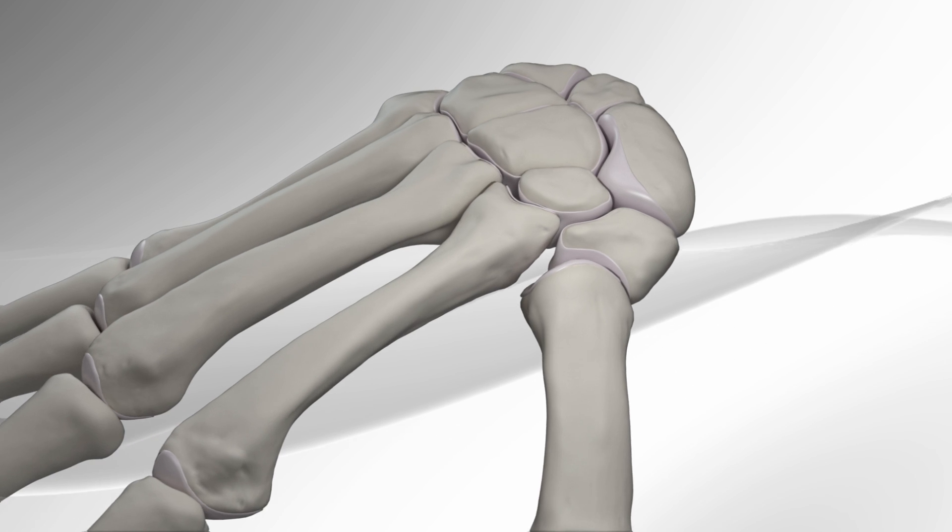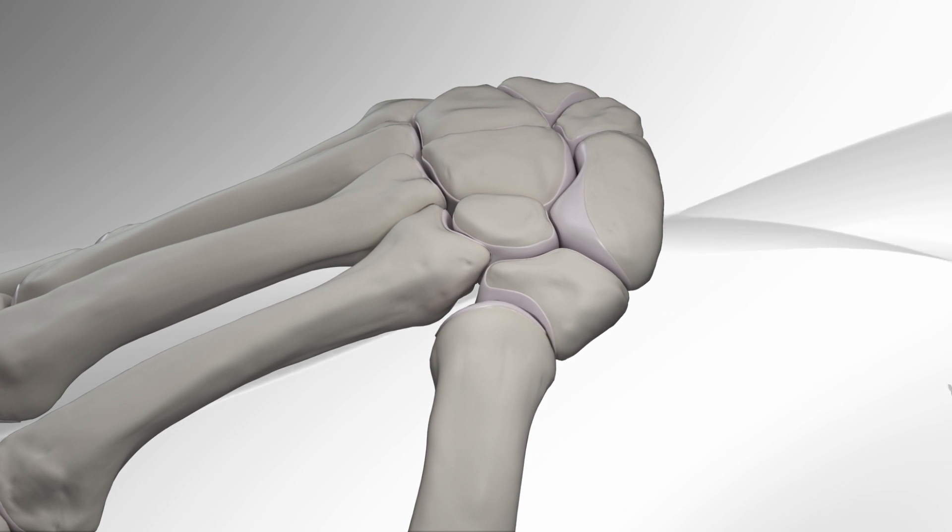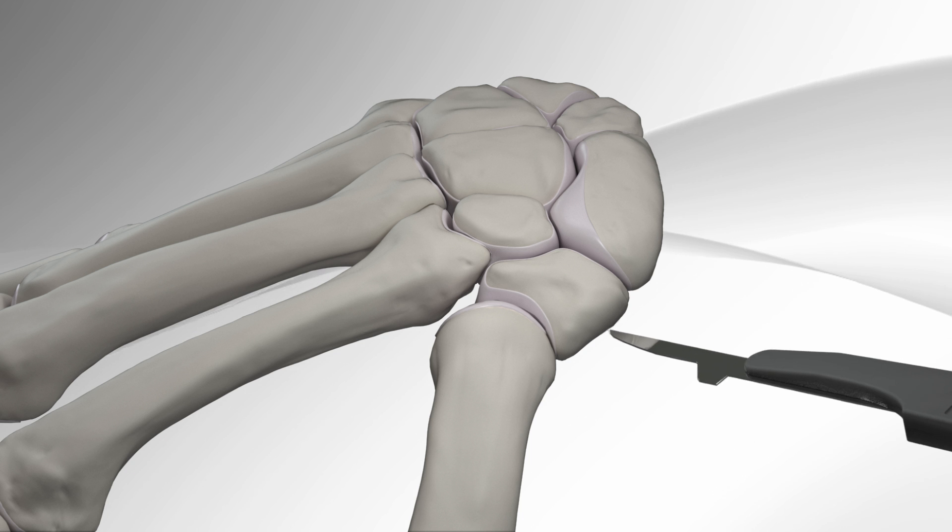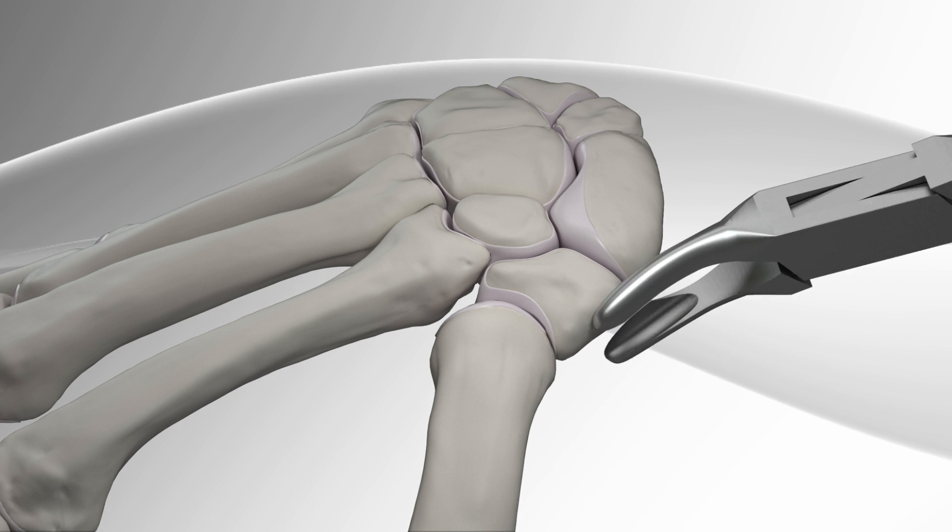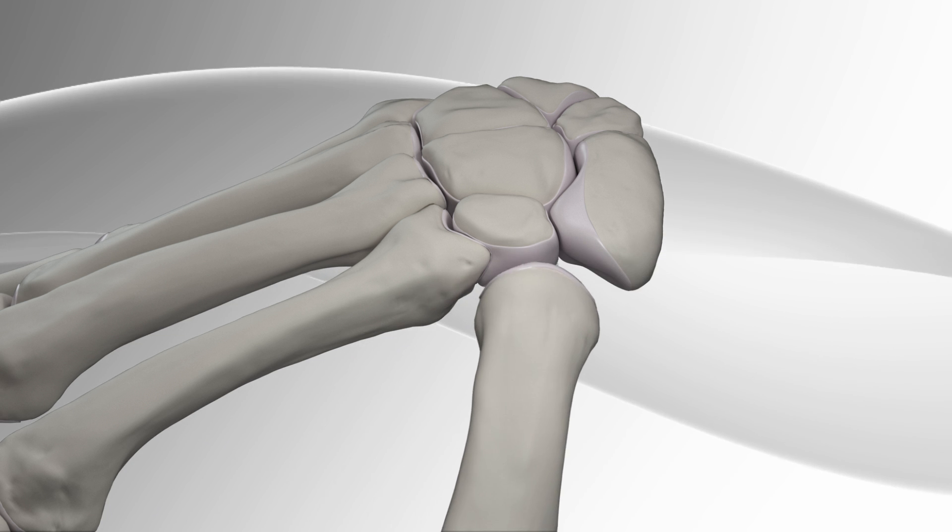First, a skin incision is placed at the base of the thumb to expose and remove the diseased bone, trapezium. A second skin incision is placed between the index and long fingers at the upper portion of the hand.